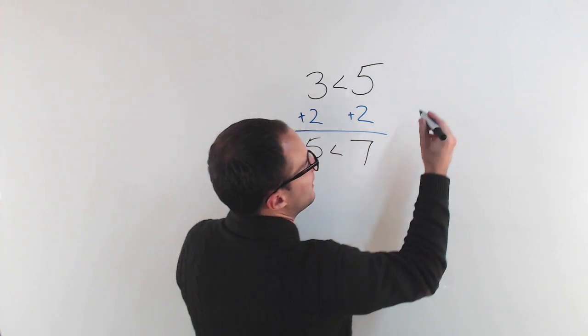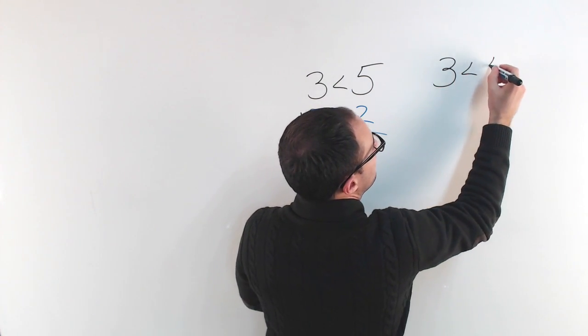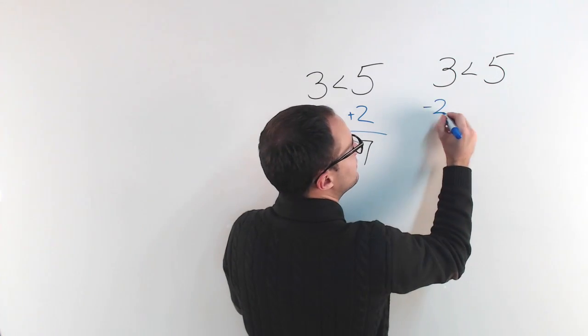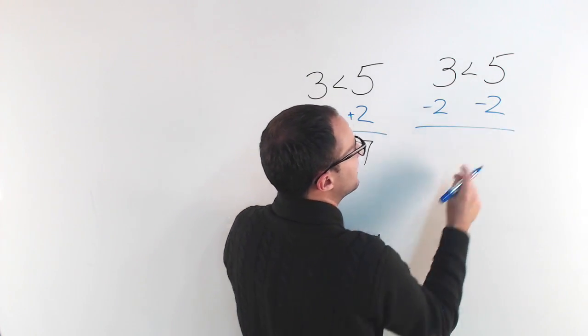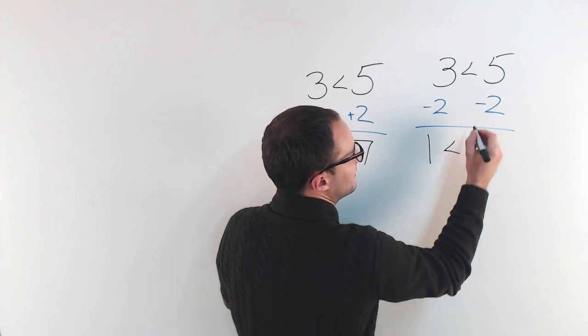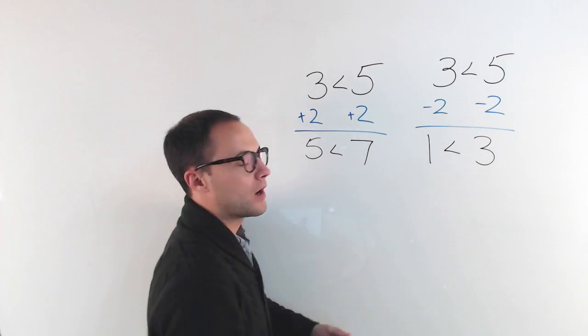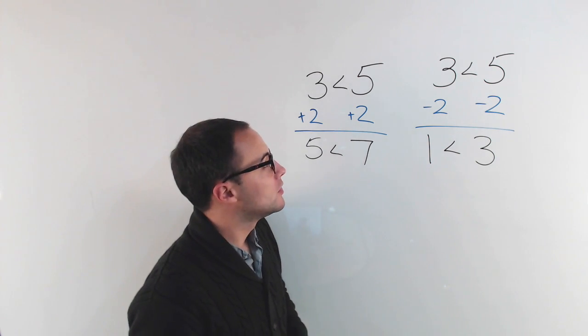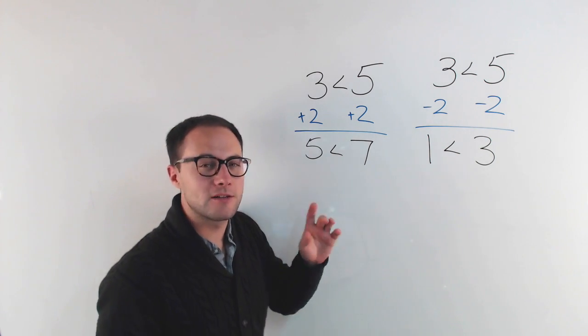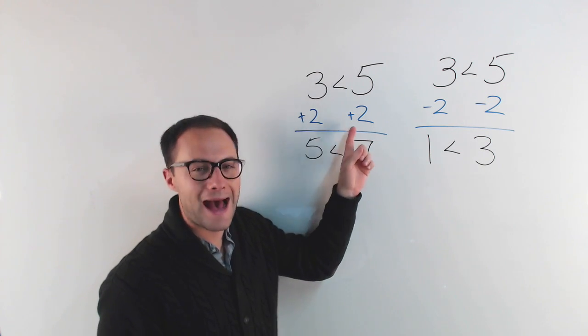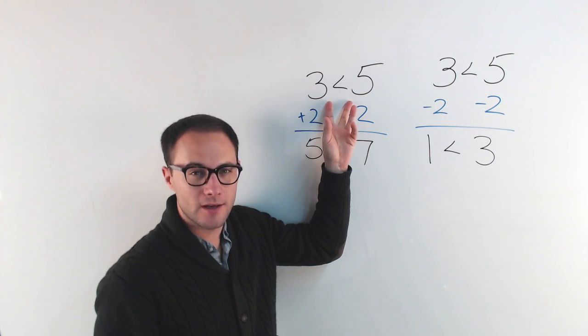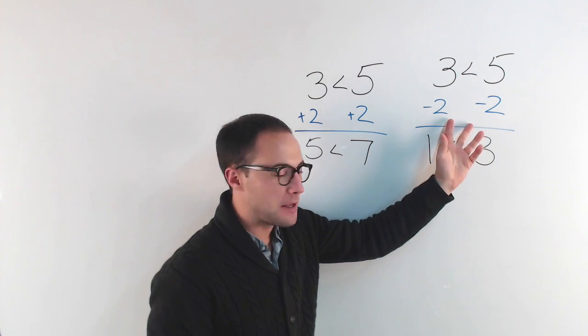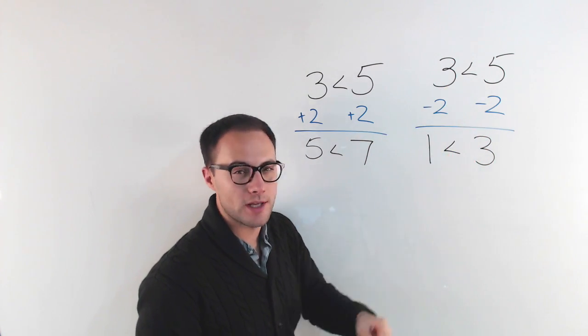Let's do that again, but this time, instead of adding 2, let's subtract 2. So if I subtract 2 from both sides, then I get 1 is less than 3. Well, is that still true? Yeah, 1 is still less than 3. So with this information, hopefully you can see that if we add the same thing to both sides of an inequality, it stays true. If we subtract the same thing from both sides of an inequality, it also stays true.